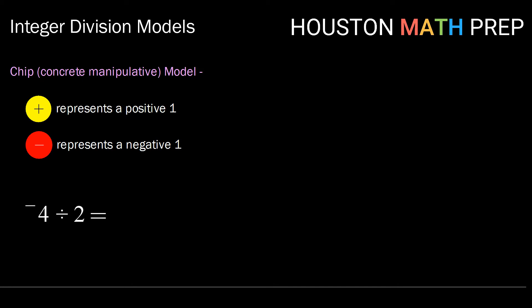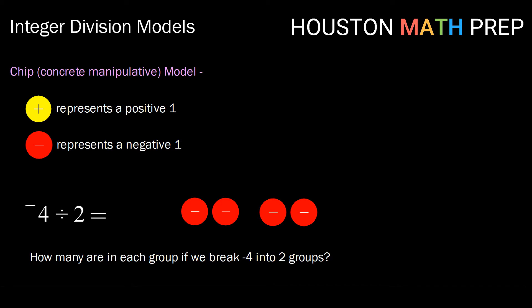So let's see how we model negative four divided by two. Well, here we're going to take four negative chips, and we're going to divide or ask the question, how many are in each group if we break negative four into two equal-sized groups? Well, there are negative two or two red chips in each of our two groups. So negative four divided by two is negative two.